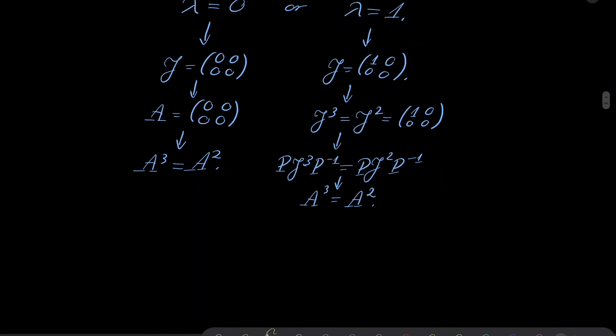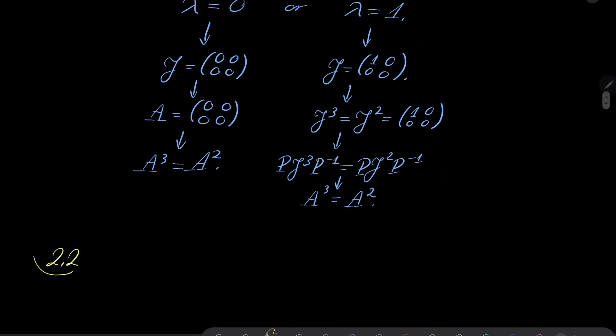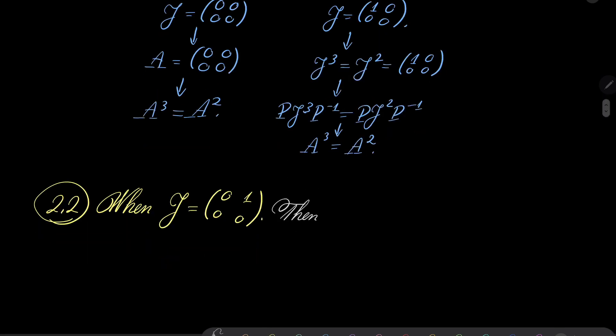2.2 is when second case is when J equals 0, 0, 0, 1 in this place. Notice that then, pretty easy to see that then, I leave the details to you. But in this case, J squared is already 0 matrix. And of course, since J squared is 0 matrix, J cubed is also 0 matrix.